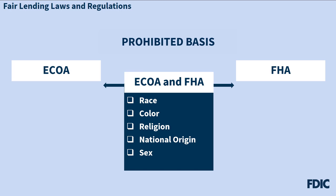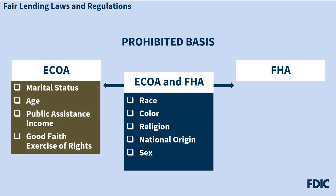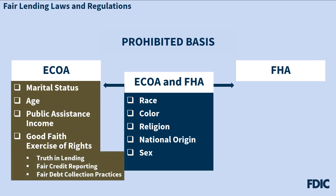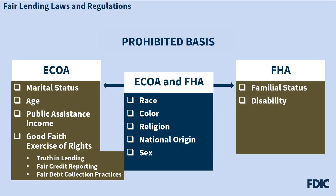ECOA also prohibits discrimination based on marital status, age, an applicant's receipt of income from public assistance programs, and an applicant's good faith exercise of any rights under the Consumer Credit Protection Act. This includes the Truth in Lending Act, the Fair Credit Reporting Act, and the Fair Debt Collection Practices Act. The FHA prohibits discrimination based on familial status and disability, referred to in the statute as handicap. It also prohibits retaliation against a person who exercises his or her rights under the FHA, or retaliation against a person who helps another person exercise those rights.